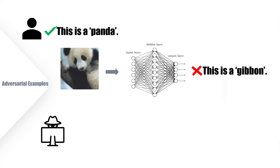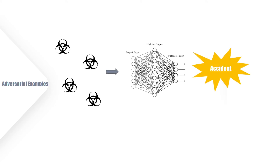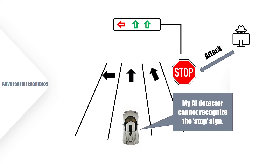The existence of adversarial samples may cause serious security behaviors, hindering the application of artificial intelligence technology in security-critical areas. For example, in automatic driving, if an adversary maliciously modifies a stop sign, the object detection system of vehicles may misclassify the stop sign, resulting in a serious accident.